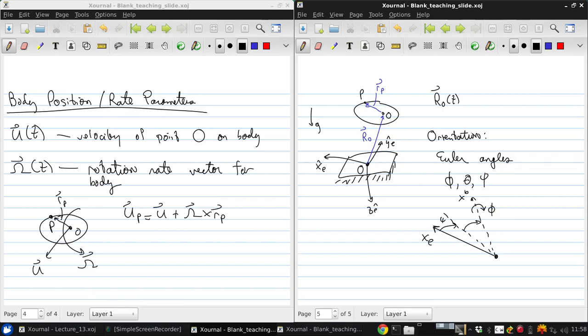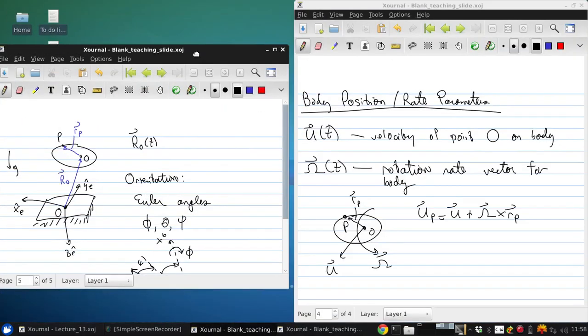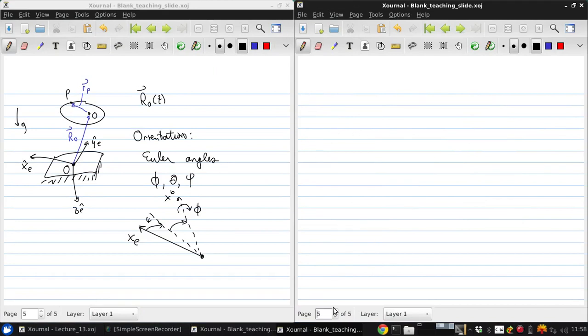So the angles again correspond to... I'm going to write this out because this is very important to make sure that you've got this. So phi is the body roll angle. This is a rotation about the X body axis.